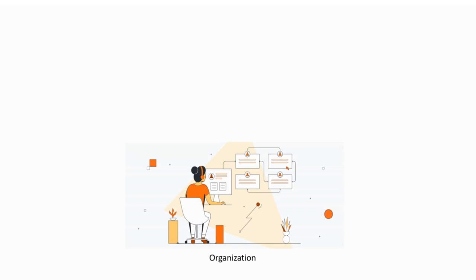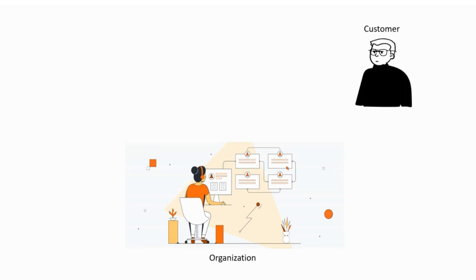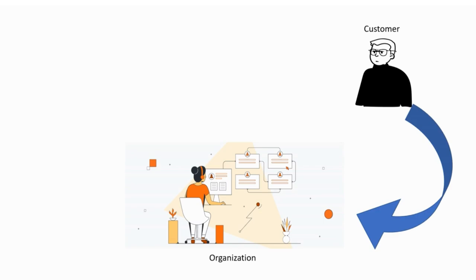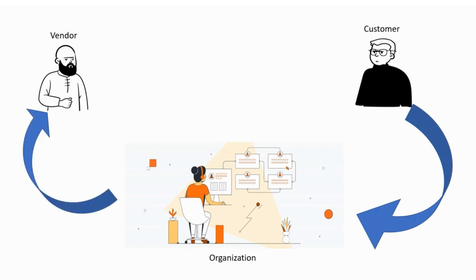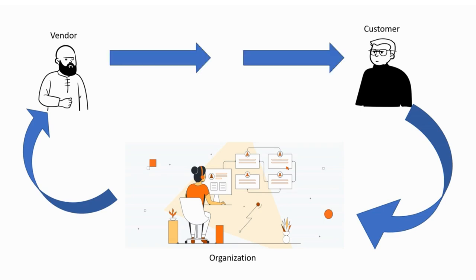Say suppose there is an organization which is our organization, and there is a customer who gives the order to us. However, due to some reason — say geographical constraint or unavailability of stock — we cannot or don't want to deliver directly from our warehouse to the customer. Instead, we take the order from the customer, discuss it with our vendor who can deliver the product, pass the order to the vendor, and the vendor will directly deliver to our customer. The ownership of the order still remains with us.